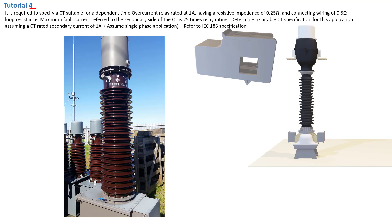The relay is rated at 1 amp, having a resistive impedance of 0.25 ohm, and connecting wiring of 0.5 ohm loop resistance. Pay attention to the problem statement. The maximum fault current referred to the secondary side of the CT is 25 times the relay rating. Determine a suitable CT specification assuming a CT rated secondary current of 1 amp, which is the same as the relay rated at 1 amp.